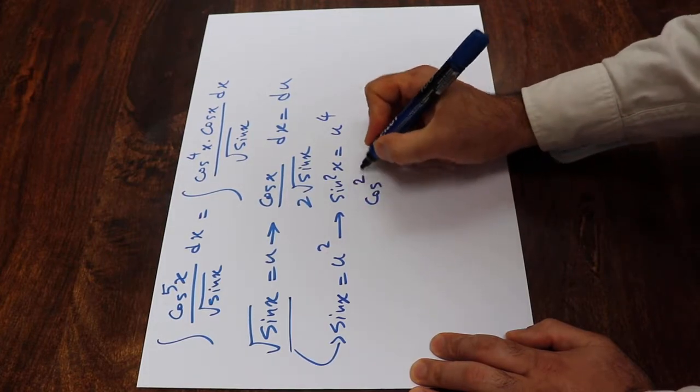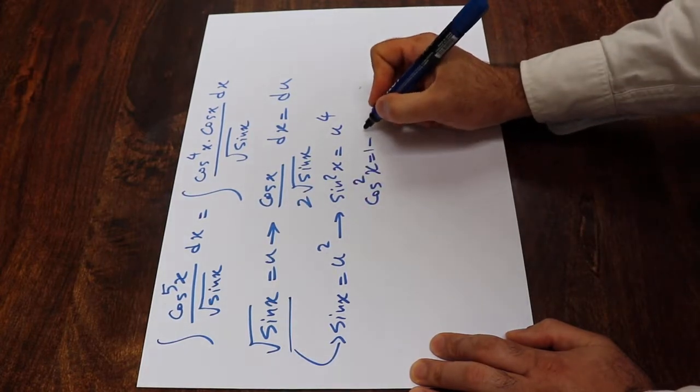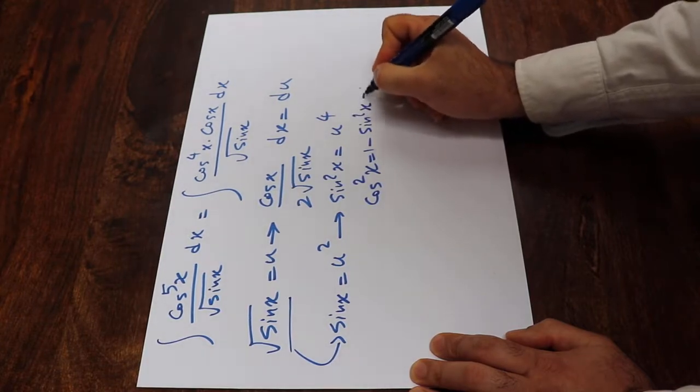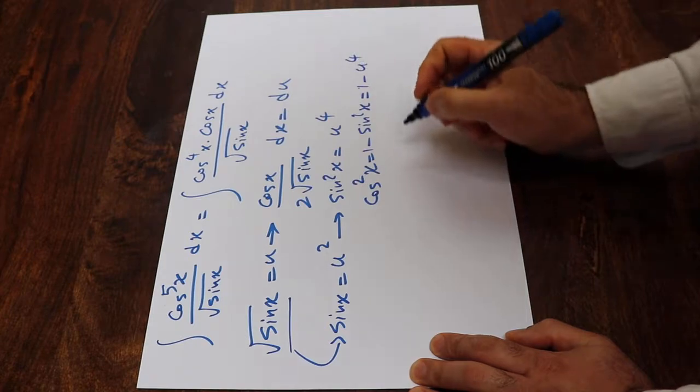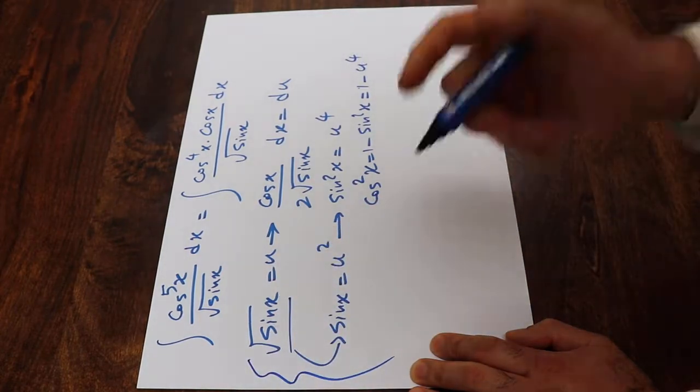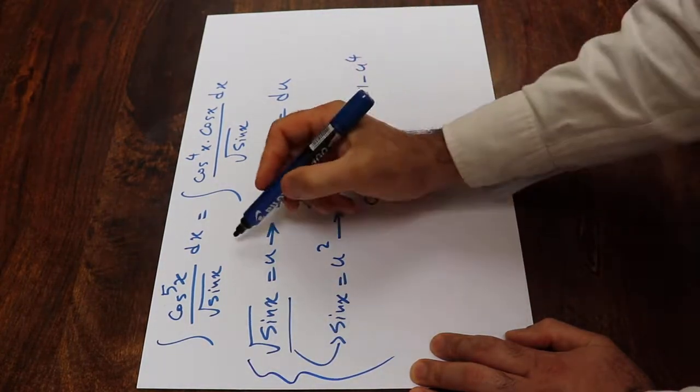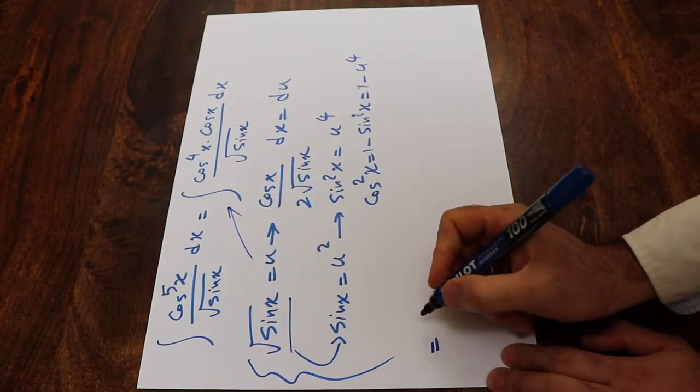And from trigonometry, you know that cosine 2x equals 1 minus sine 2x, which equals 1 minus u to the 4th. So all you need to do here is to substitute these expressions into this integral. And if you do that,